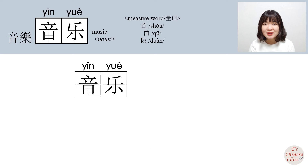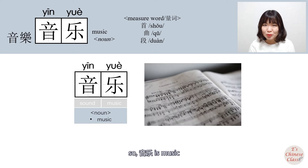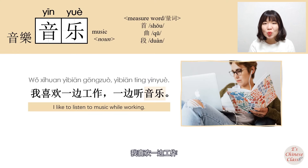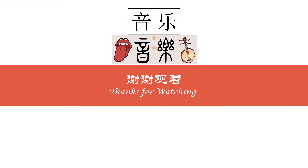音乐: 音 means sound, 乐 means music, so 音乐 means music. For example: 我喜欢一边工作，一边听音乐 — I like to listen to music while working.